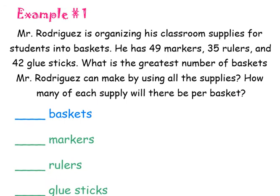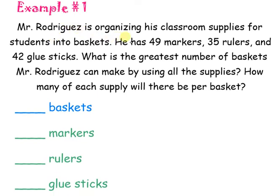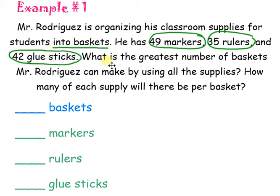Alright, so let's get started with our first example. Mr. Rodriguez is organizing his classroom supplies for students into baskets. So, already we're organizing something into baskets, which gives me a hint it's going to be GCF. He has 49 markers, and I like to circle that, 35 rulers, and 42 glue sticks.